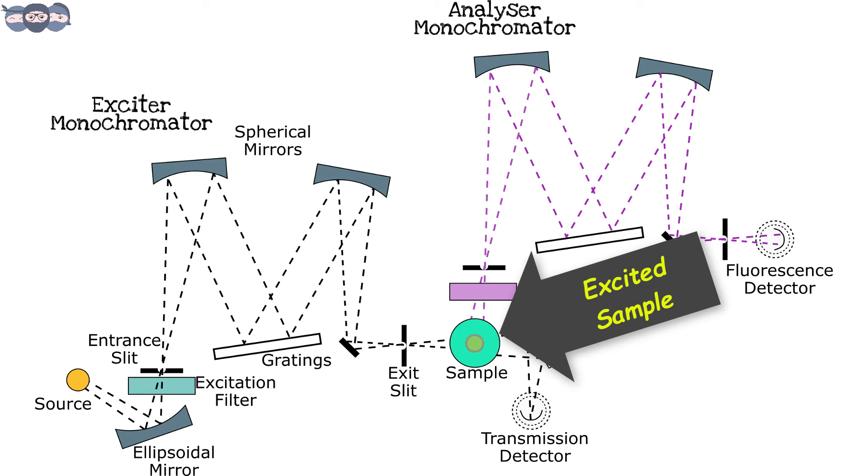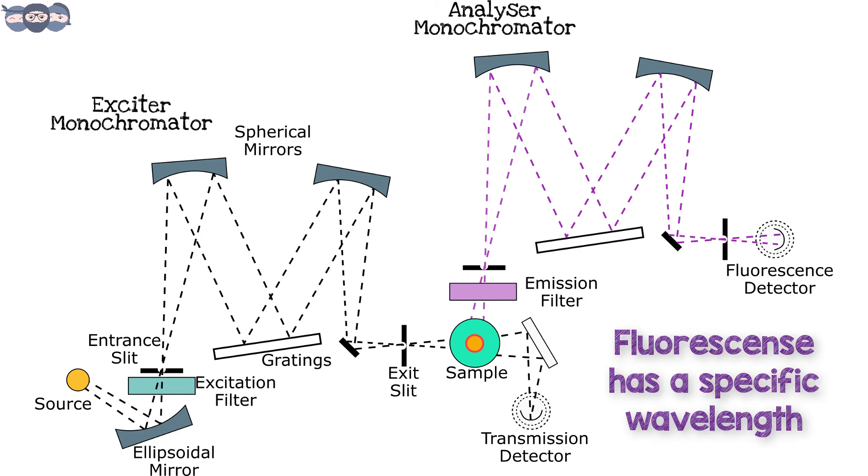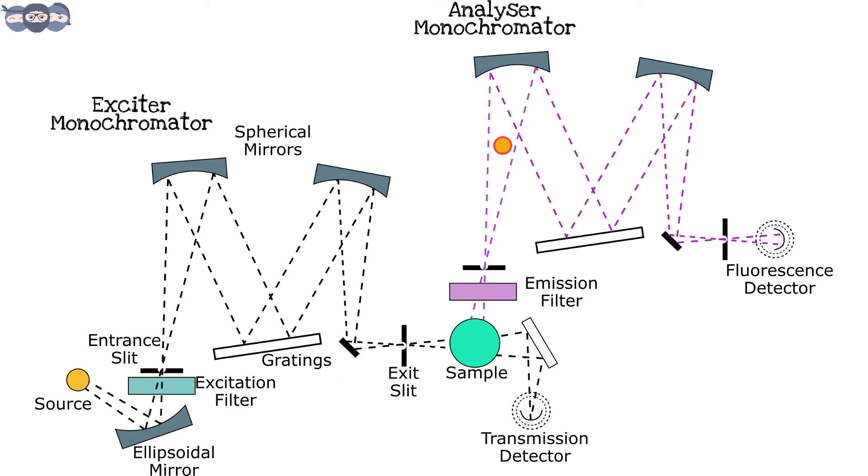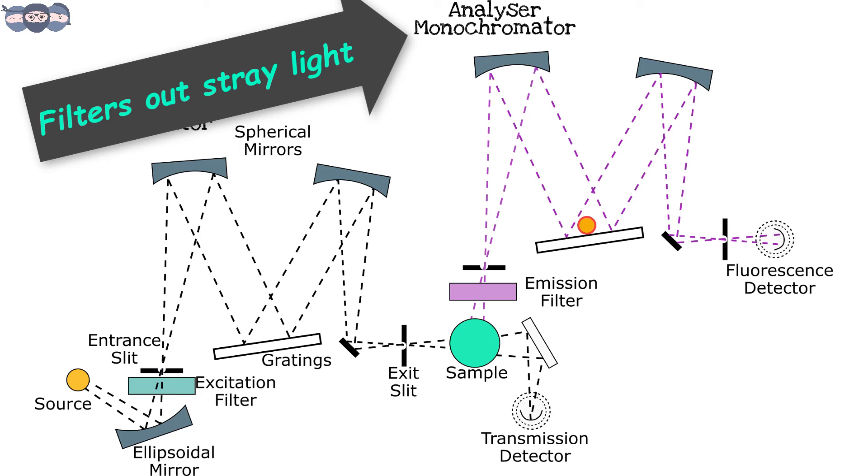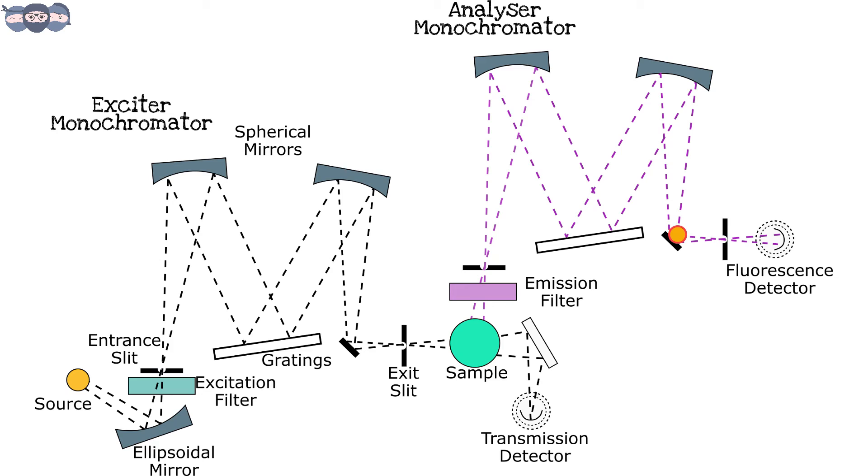The sample gets excited by the incident radiation. The phenomenon of fluorescence takes place and fluorescence of a particular wavelength is emitted by the sample. This emitted radiation is made to pass through the analyzer monochromator which filters out any stray light mixed with fluorescent radiations. Once the fluorescence exits the analyzer monochromator, its intensity is measured by the detector which is generally a PMT.